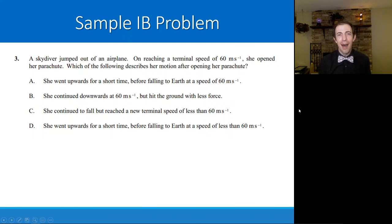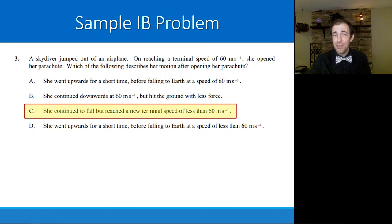Next sample problem. A skydiver jumped out of an airplane upon reaching a terminal speed of 60 meters per second. She opened her parachute. Which of the following describes her motion after opening the parachute? A, she went upward for a short time before falling to earth at a speed of 60 meters per second. B, she continued downward at 60 meters per second but hit the ground with less force. C, she continued to fall but reached a new terminal speed that was less than 60 meters per second. Or D, she went upward for a short time before falling to earth at a speed less than 60 meters per second. We touched upon this as well. Even though the net force is going to be upward to slow her down, she is still very much moving downward just at a new slower speed.